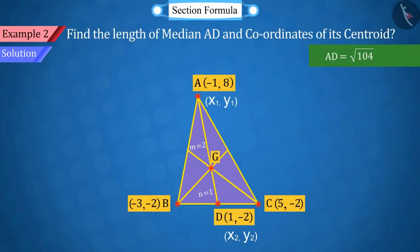Where the coordinates of point A are x₁=-1, y₁=8, and point D are x₂=1, y₂=-2.